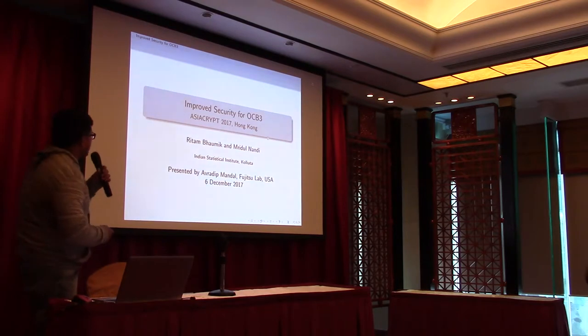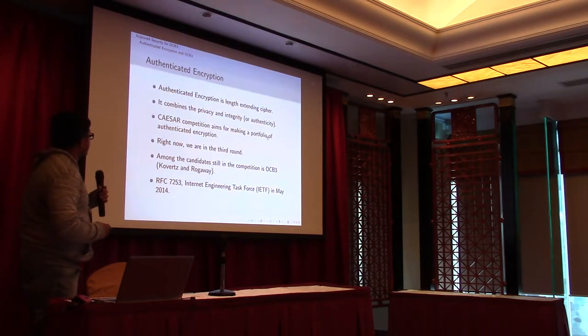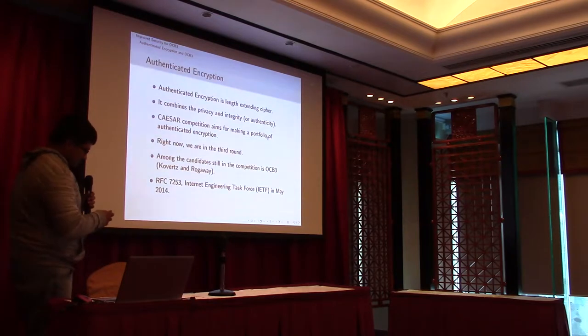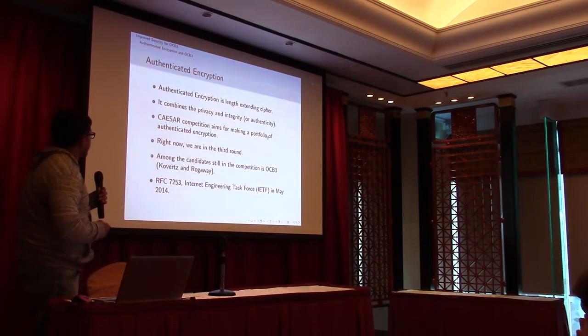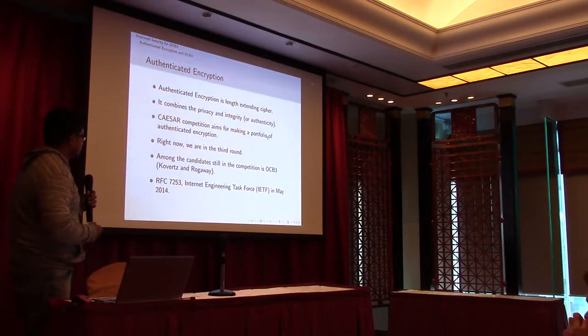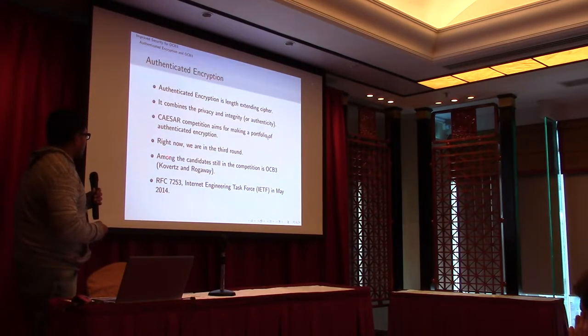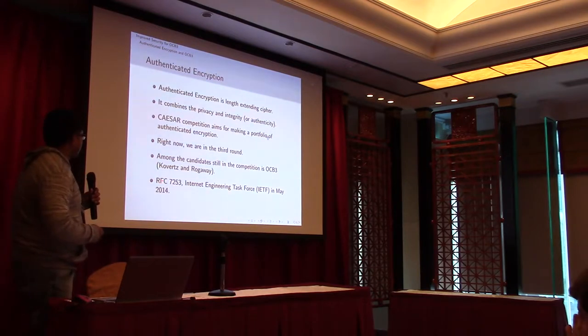So this talk is about improved security of OCB3. OCB3 is authenticated encryption, and any authenticated encryption is a length extending cipher. It combines privacy and integrity. The CAESAR competition aims for making a portfolio of authenticated encryption, and right now we are in the third round. Among all the candidates that are still in the competition, OCB3 is one of them. OCB3 has also been standardized by RFC 7253 in 2014.